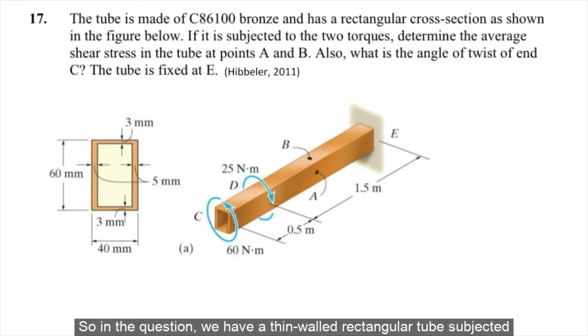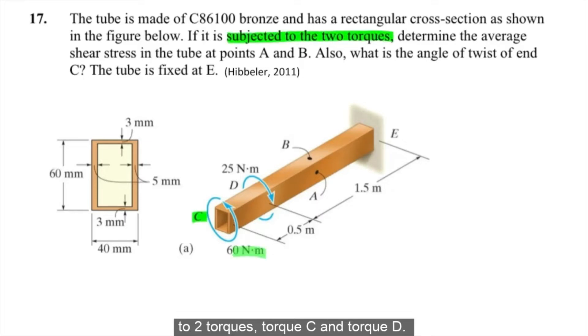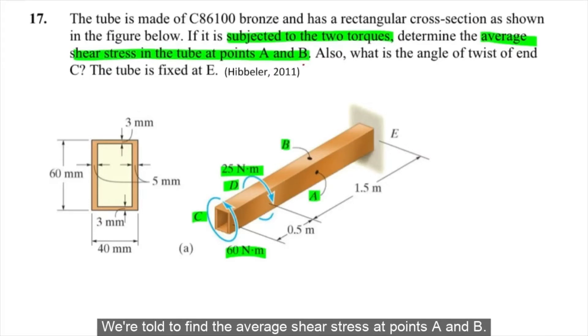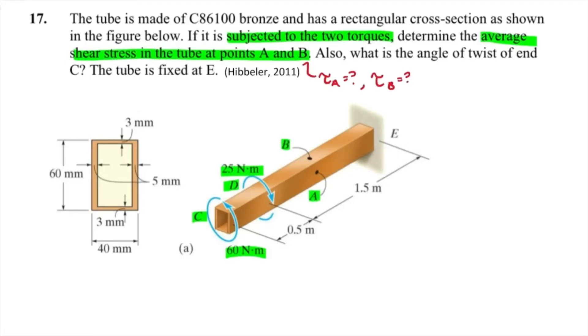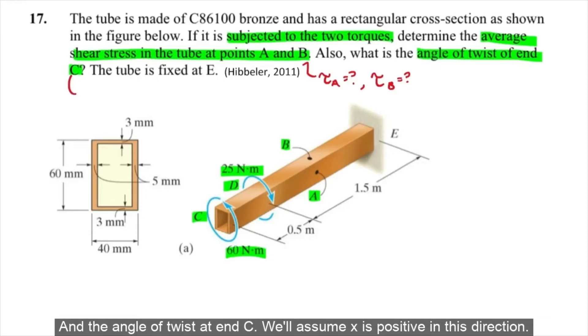In the question we have a thin-walled rectangular tube subjected to two torques, torque C and torque D. We're told to find the average shear stress at points A and B, and the angle of twist at end C. We'll assume X is positive in this direction.